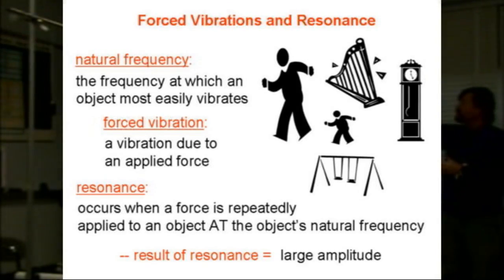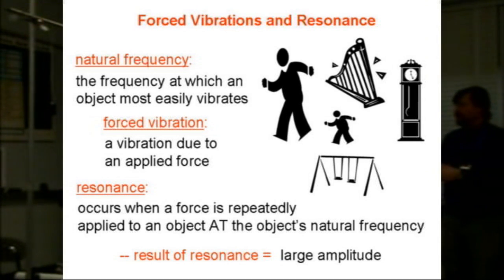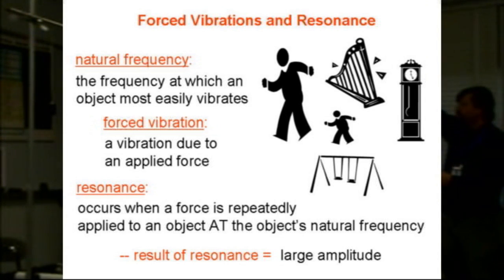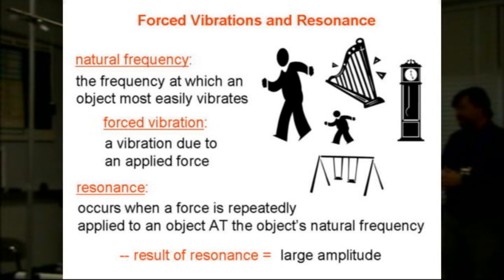We have a natural frequency — the frequency at which an object most easily vibrates. Then we have a forced vibration, which is a vibration due to an applied force. And then we have resonance, which occurs when a force is repeatedly applied to an object at the object's natural frequency.